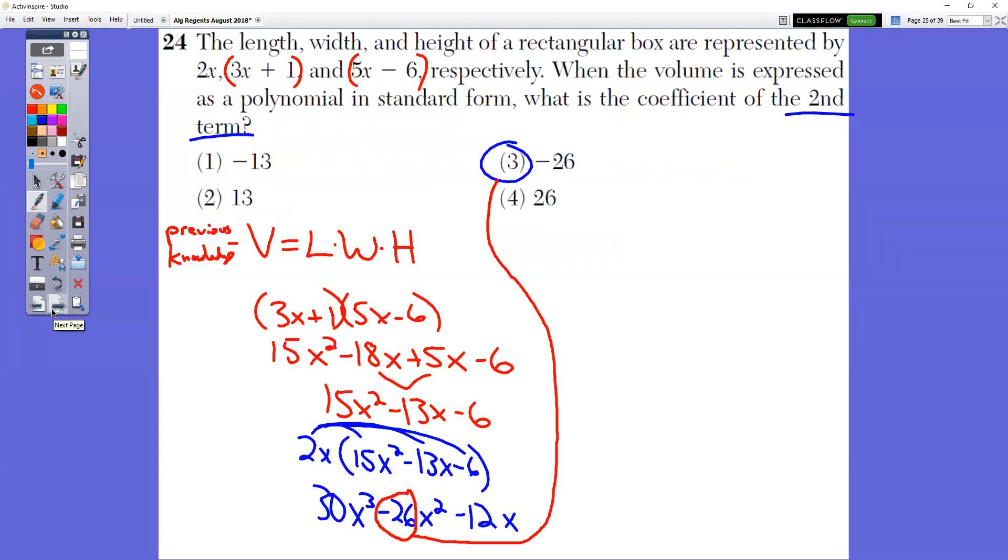And then in question number 24, the length, width, and height of a rectangular box are represented by those three things. When the volume is expressed as a polynomial in standard form, what is the coefficient of the second term? They expect you to know this ahead of time. Volume equals length times width times height. So if you didn't know that, you wouldn't be able to solve the question, all right?